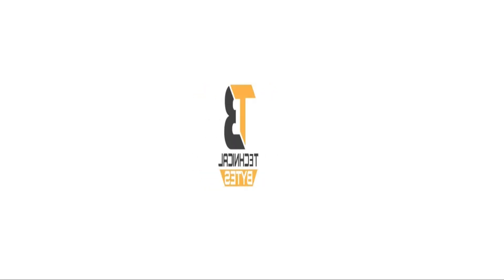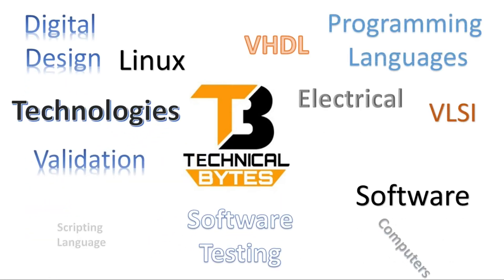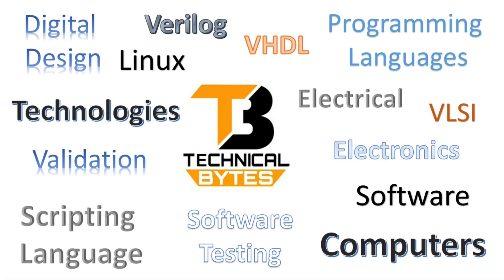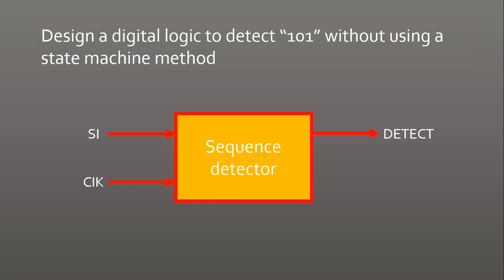The question is on your screen: you have to design a digital logic to detect 101 — in other words, you have to design a sequence detector to detect 101. This is a most commonly asked question, asked from freshers as well as experienced people. When asked, candidates typically start drawing a state machine, but the condition here is you do not have to use any state machine.